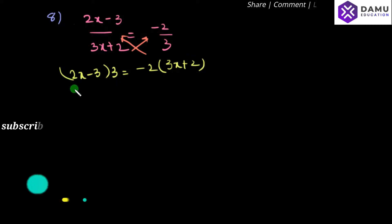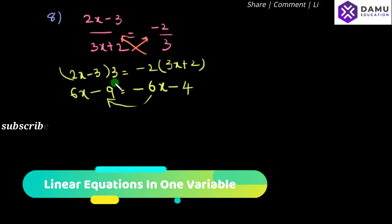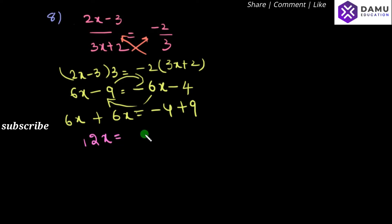So, 3 into 2x is 6x, minus 3 into 3 is 9. Minus 2 into 3x is minus 6x, minus into minus 2 into 2 is plus 4. What we will do is shift all the variables to the left side and constants to the right side. So, 6x plus 6x will be equal to minus 4 plus 9. So, 6x plus 6x is 12x, will be equal to 5. Bigger number is 9, minus 4 gives 5. So, x will be equal to 5 by 12.